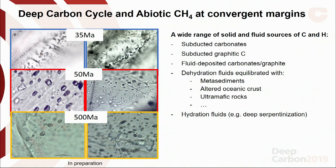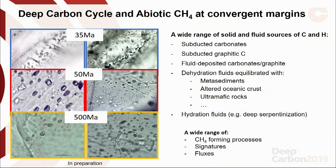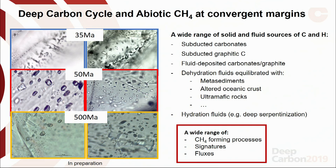Carbon sources include subducted carbonates, or graphitic carbon, or fluid-deposited graphite, or carbonates. Hydrogen comes from dehydration fluids produced or equilibrated with different rock types at depth — sediments, oceanic crust, ultramafic rocks — or hydration fluids produced at depth from, for example, deep serpentinization processes. There is a huge combination of sources for these deep fluids, and of course a wide range of potential processes to produce deep abiotic methane, with varying signatures and fluxes.